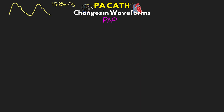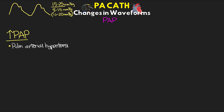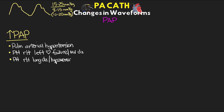On to the PA waveform — let's discuss things that can lead to elevated PA pressures. These include pulmonary arterial hypertension, pulmonary hypertension due to left heart failure or mitral valve disease such as mitral stenosis or mitral regurgitation, pulmonary hypertension due to lung disease and/or hypoxemia such as emphysema or interstitial lung disease, and pulmonary hypertension due to chronic PE. All of these lead to elevations in PA pressures.